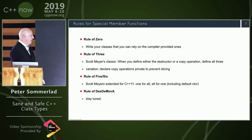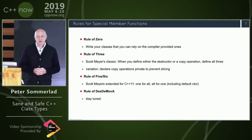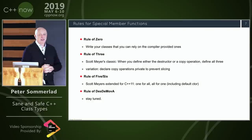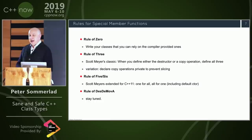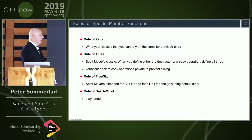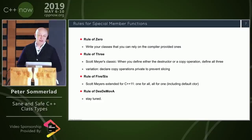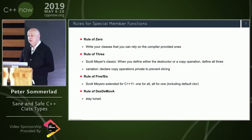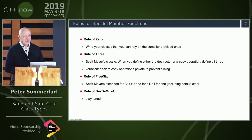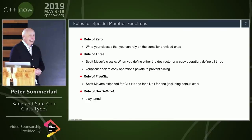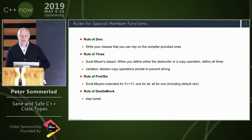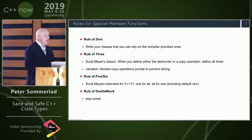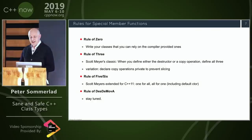When C++11 introduced move operations, we went from three special member functions to five or six. People then came up with the Rule of Five: if you define one, declare all six. In my opinion, that's generally not a good idea — it's easy to define them incorrectly, or to provide them where you don't want to. Then there's the rule of 'define destructor, delete the move assignment,' which I'll go into in more detail later.